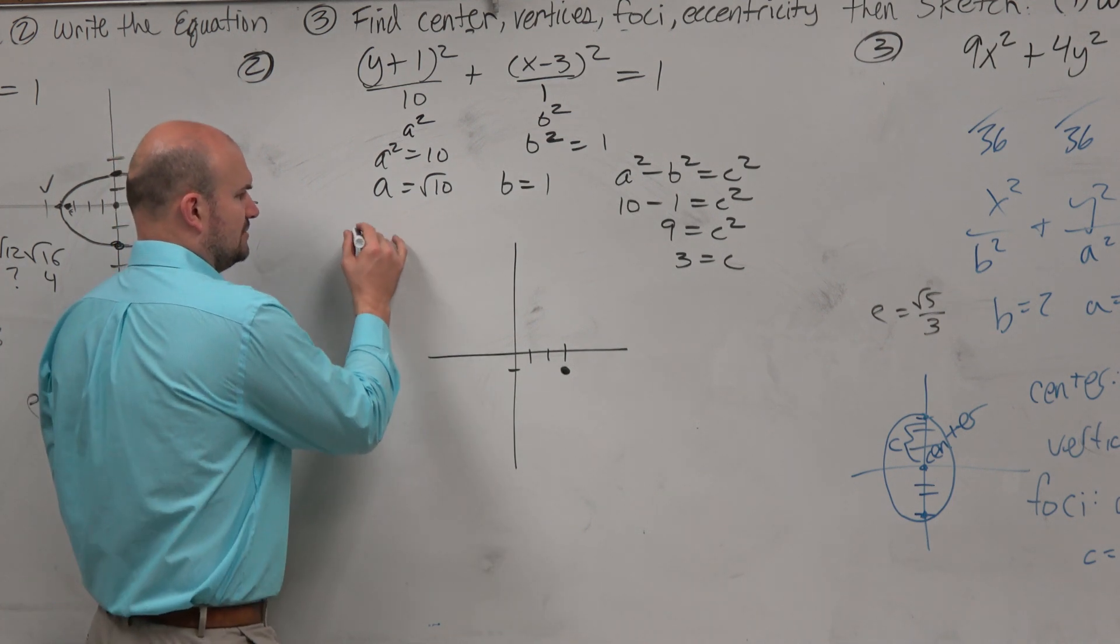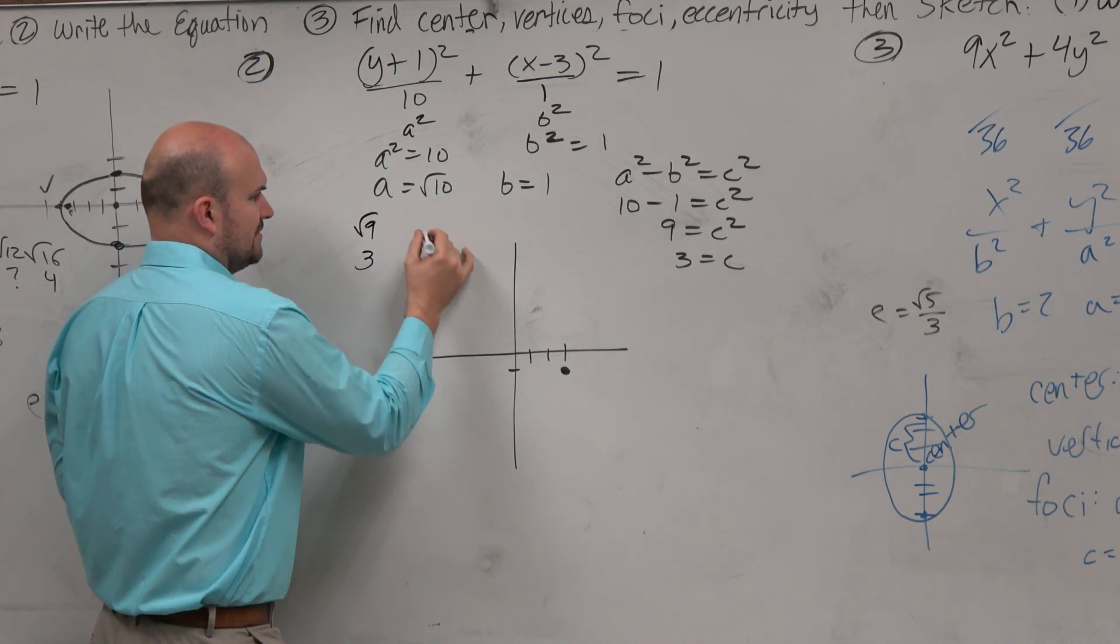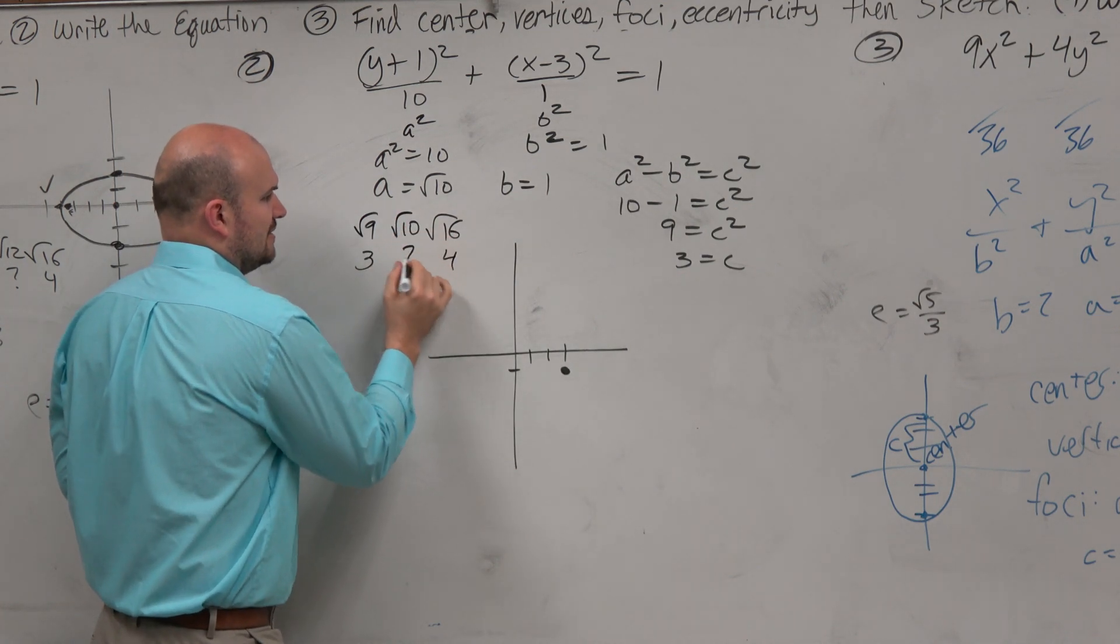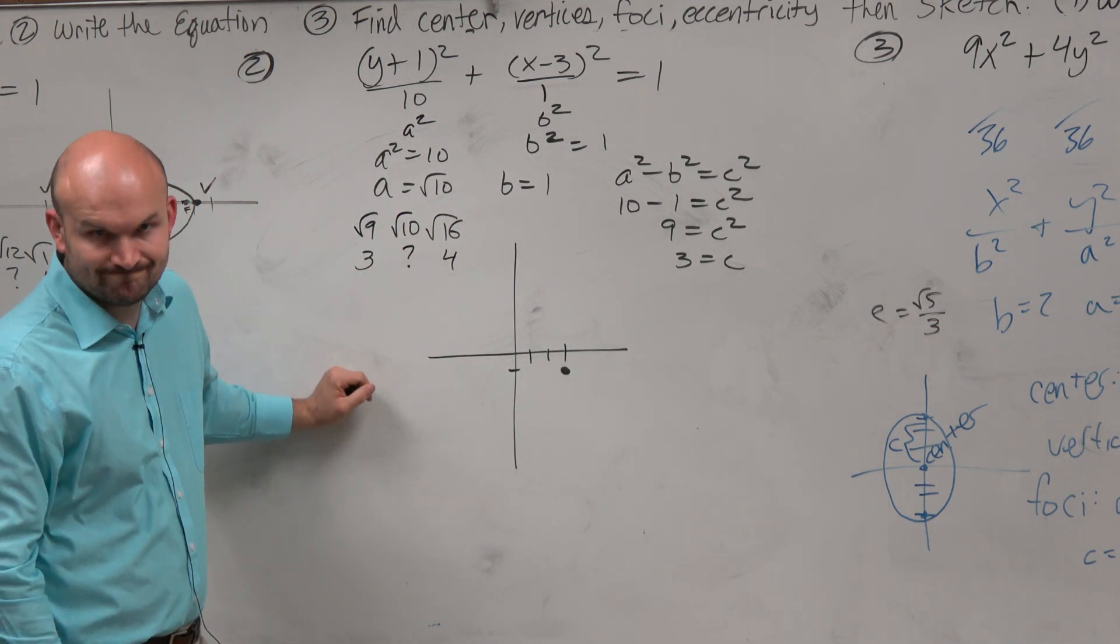Now again, where does square root of 10 lie? Well, the square root of 9 is 3, square root of 16 is 4. So the square root of 10 is somewhere in between 3 and 4, correct?